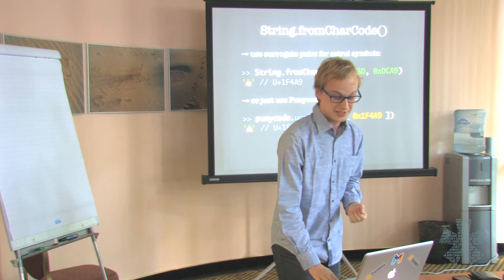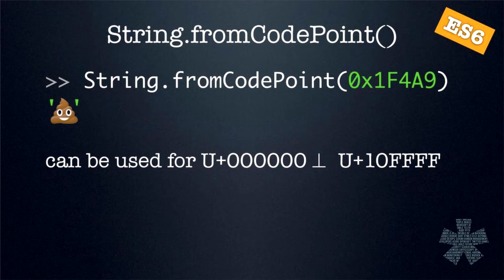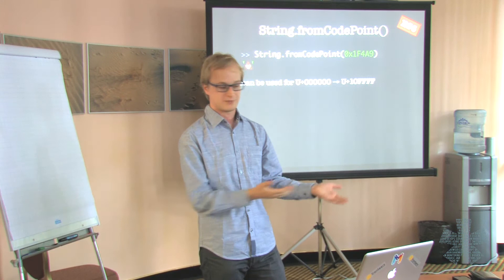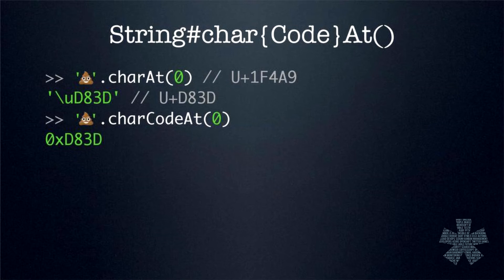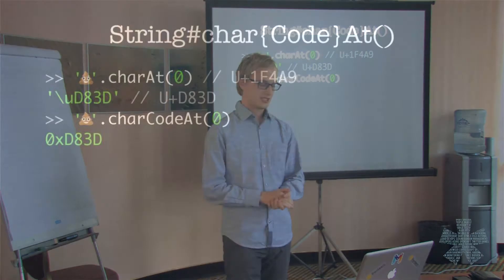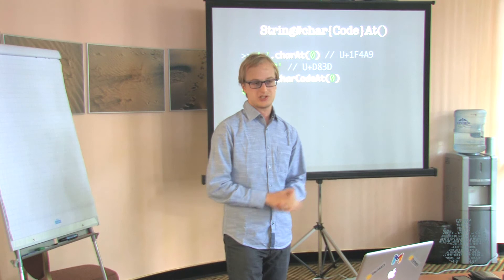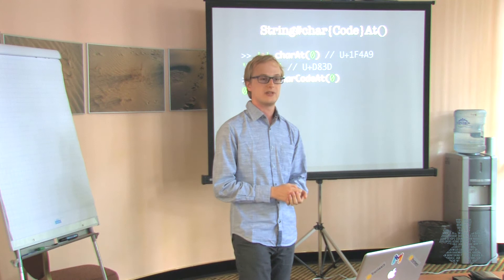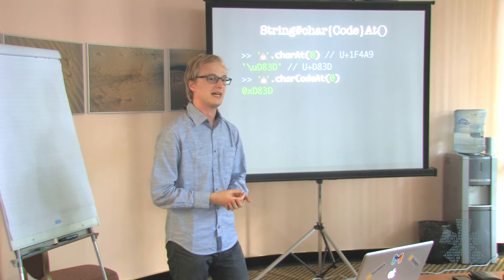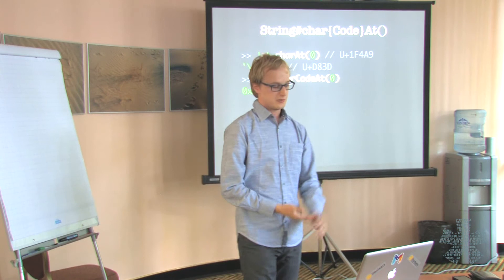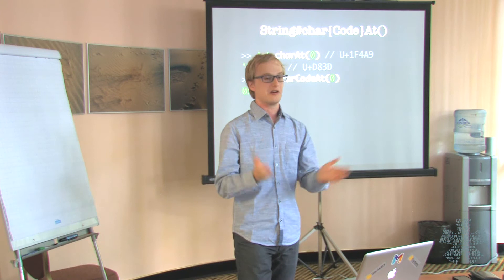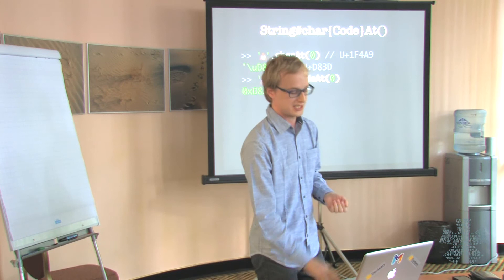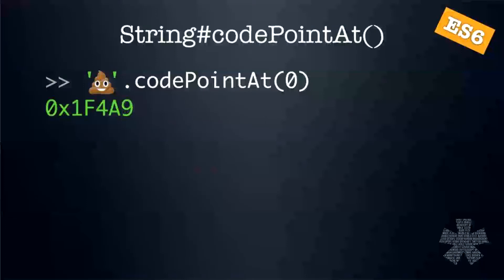Or you could wait until ECMAScript 6 arrives, because it will introduce a new method called string.fromCodePoint — it's similar to string.fromCharCode except that this one actually works for all Unicode code points, not just those in the BMP. Similarly, the string.prototype.charAt and charCodeAt methods are also affected. If you use charAt to retrieve the first symbol in a string containing only the pile of poo character, you wouldn't get the pile of poo — you'd only get the first surrogate half. ECMAScript 6 will fix this by adding codePointAt methods to the string prototype, which deal with full symbols instead of surrogate halves whenever possible.